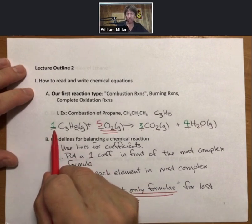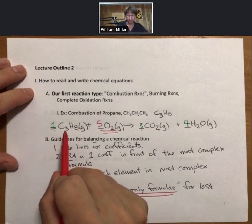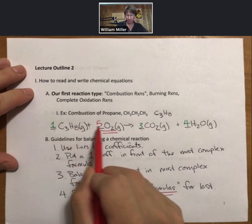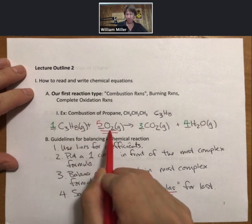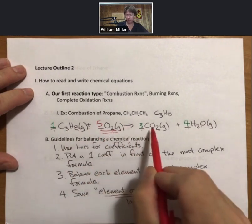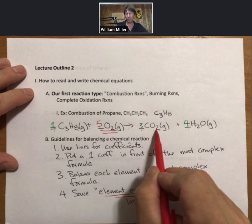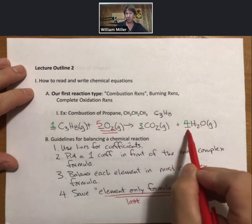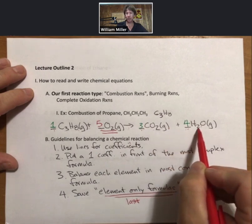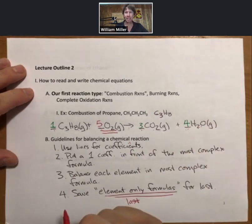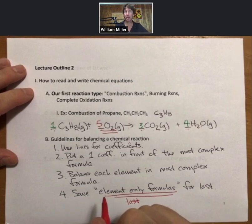That says one mole of propane reacts with five moles of oxygen to produce three moles of carbon dioxide and four moles of H2O. So when I say translate this chemical reaction or chemical equation into English and do both of the interpretations, now you'll know what I mean.